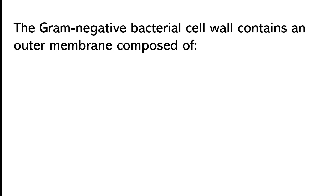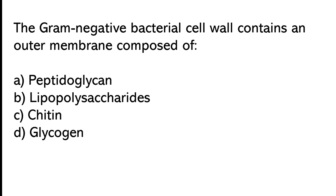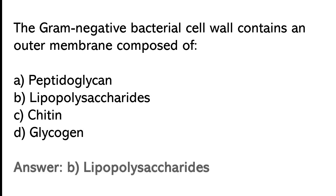The gram-negative bacterial sil wall contains an outer membrane composed of: feftoglycan, lephopolisiccharides, chitin, or glycogen. The correct answer is option B: Lephopolisiccharides.